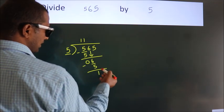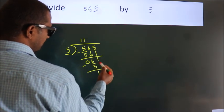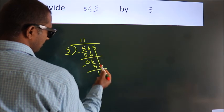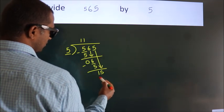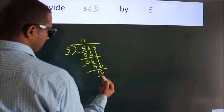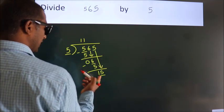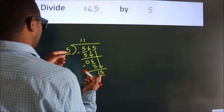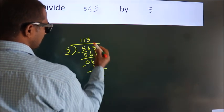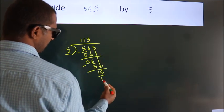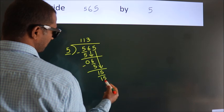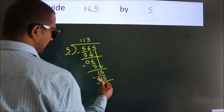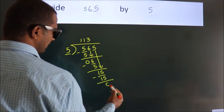After this, bring down the beside number. So 5 comes down, giving us 15. When do we get 15? In the 5 table: 5 threes is 15. Now we subtract. We get 0.